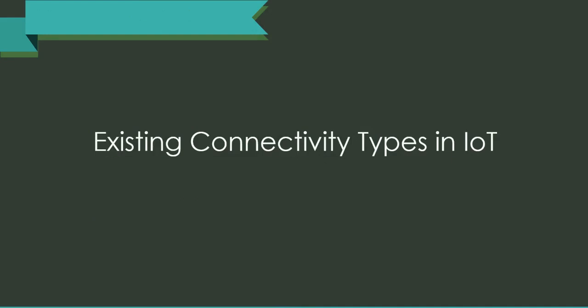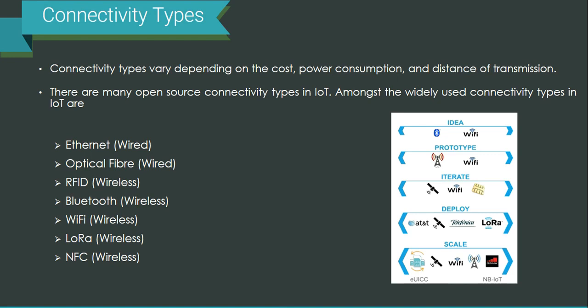Let's start with understanding the existing connectivity types in IoT applications. There are many connectivity options available — few of them are wired, few of them are wireless.